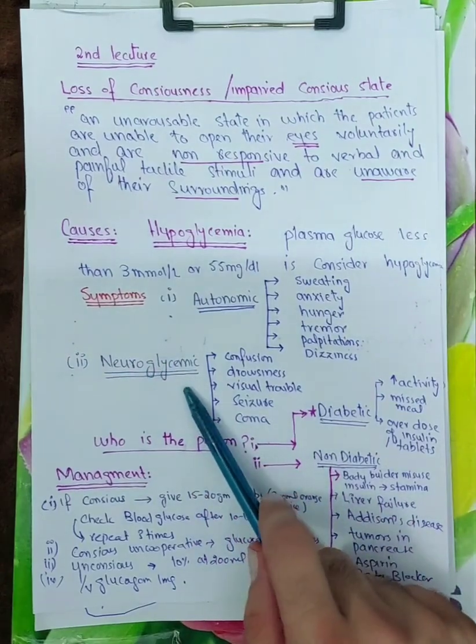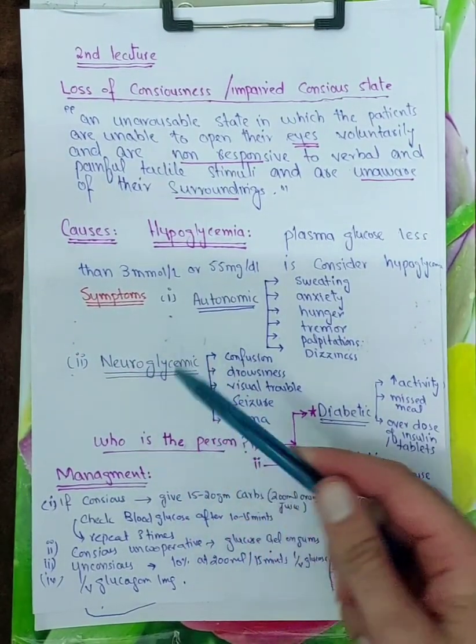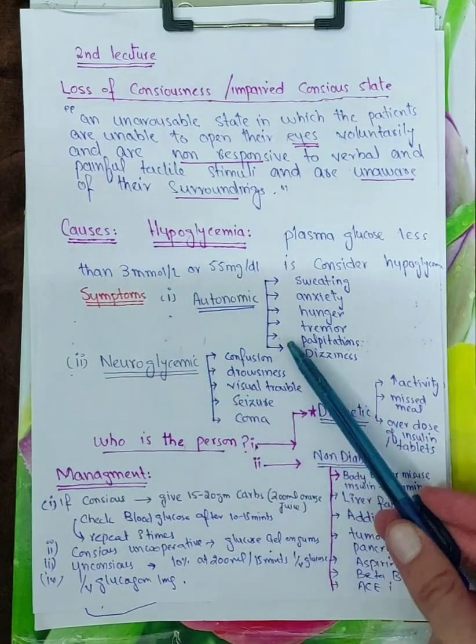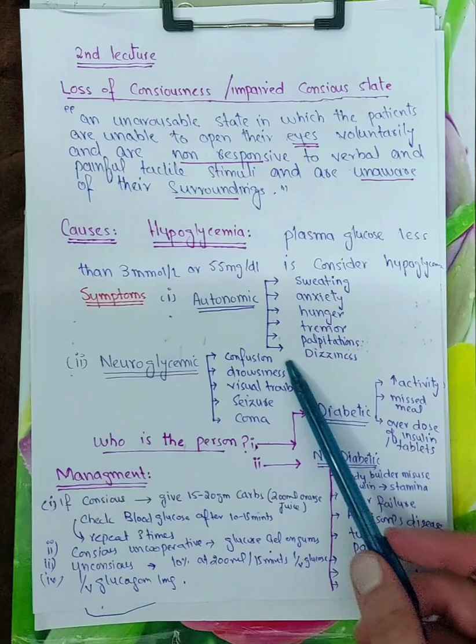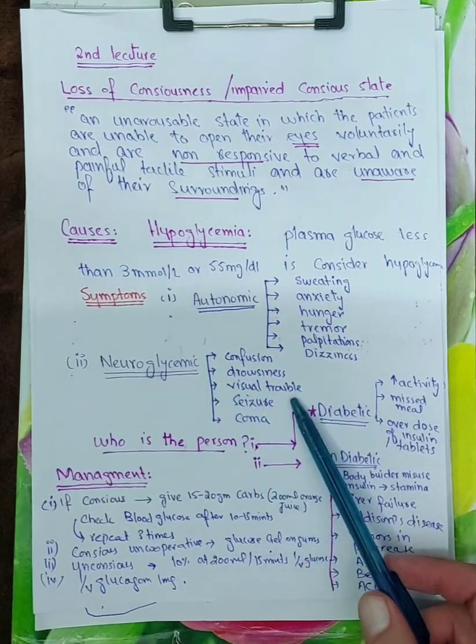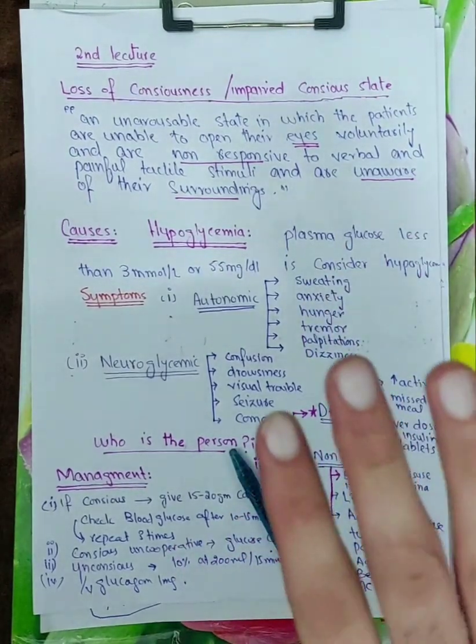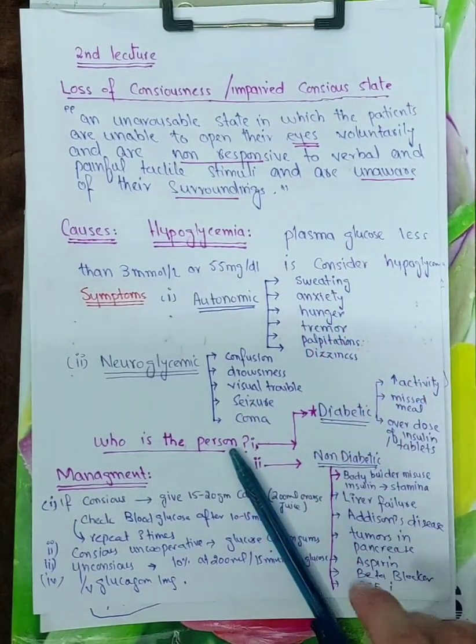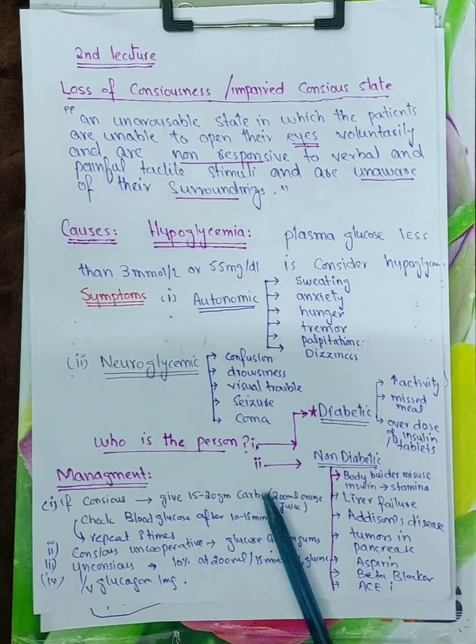The second symptom is neuroglycemic. Neuro means neuron and glycemic means low glucose level. So the patient might be confused, might be in a drowsy state, might be having visual trouble like blurring of vision. He might go into the state of seizure or into the state of coma.